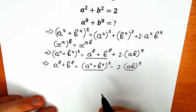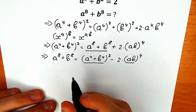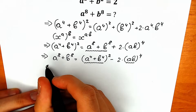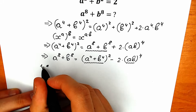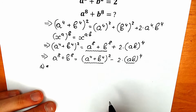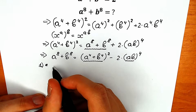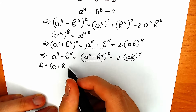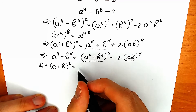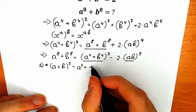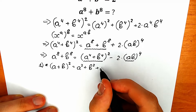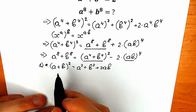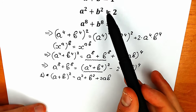First, let's find ab. How can we find ab? Let's write the basic school identity: a plus b, all squared, equals a squared plus b squared plus 2ab.